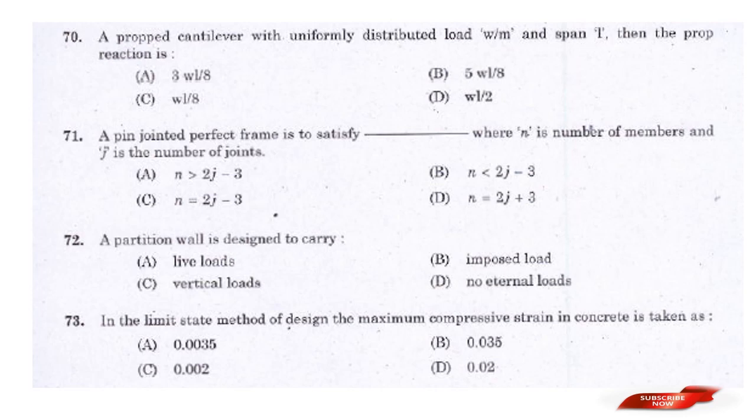Question: A propped cantilever beam with uniformly distributed load W per meter and span L — the propped reaction is — options: 3WL/8, 5WL/8, WL/8. And: A pin-joint perfect frame satisfies — options: n > 2j−3, n < 2j−3, n = 2j−3, n = 2j+3. Answer: Option C — n = 2j−3.